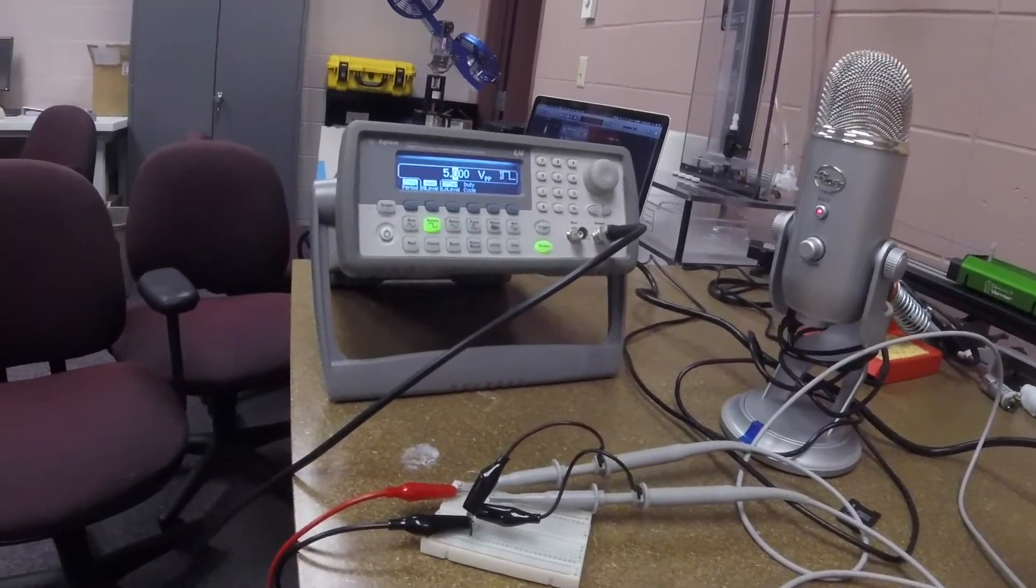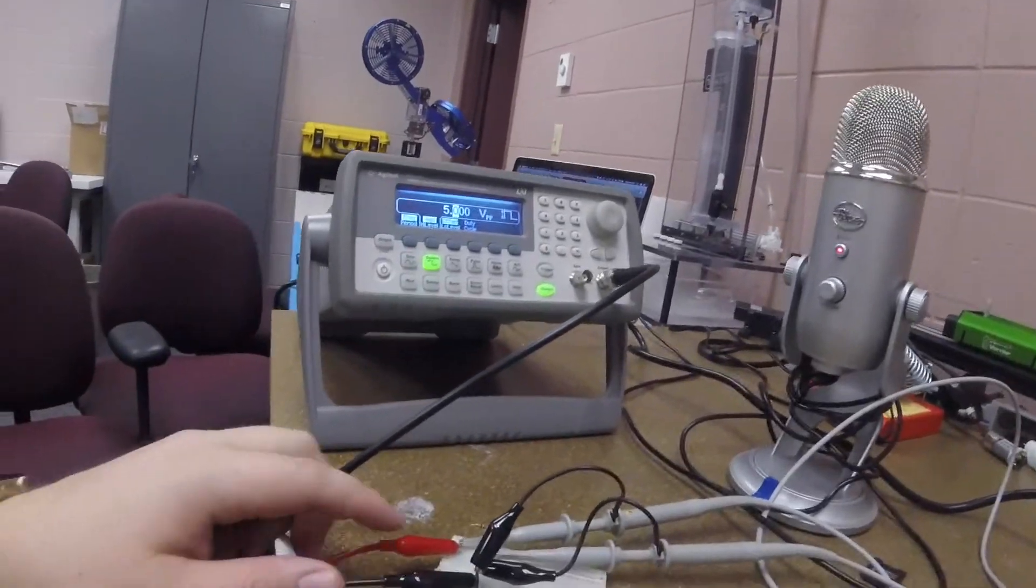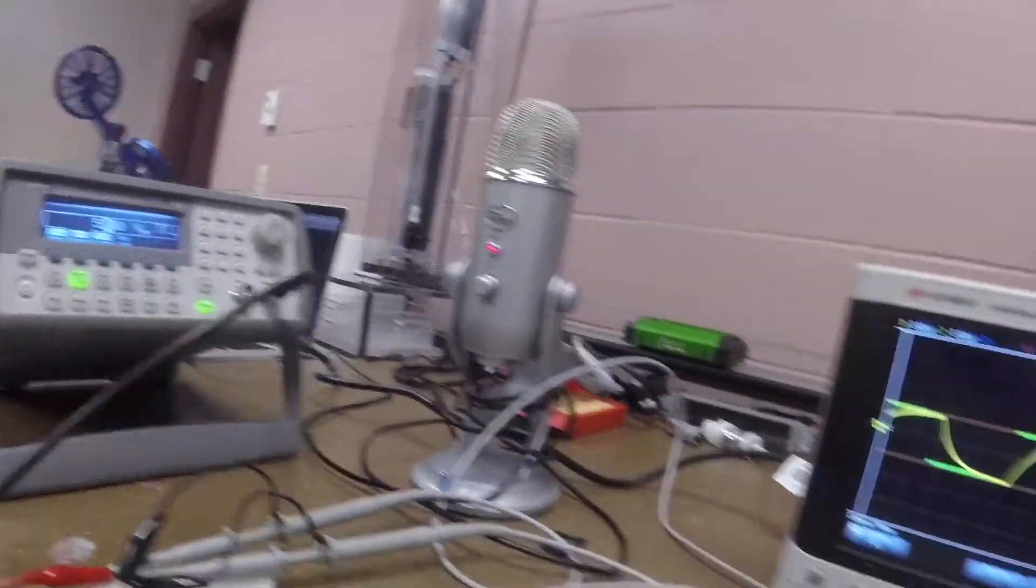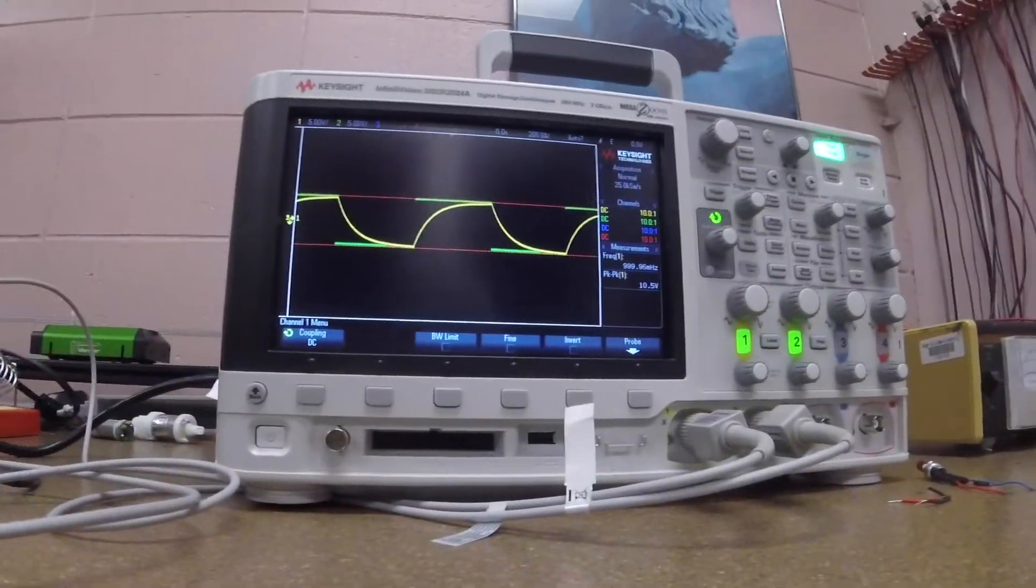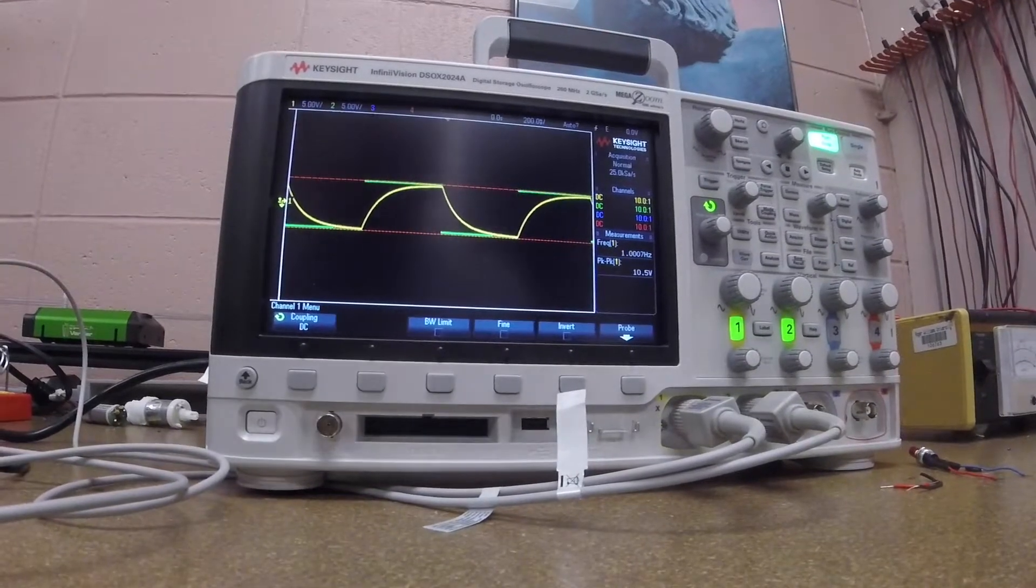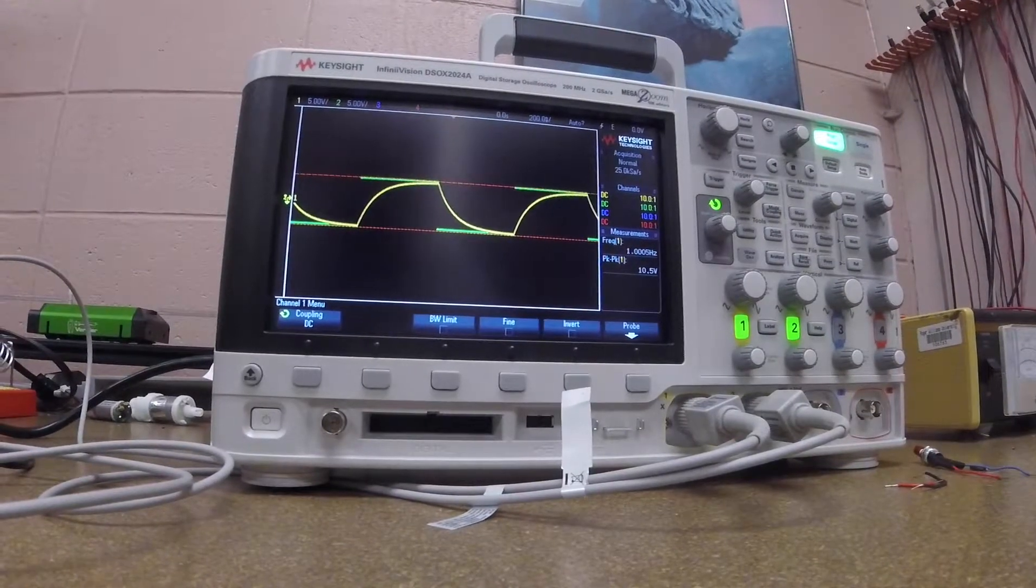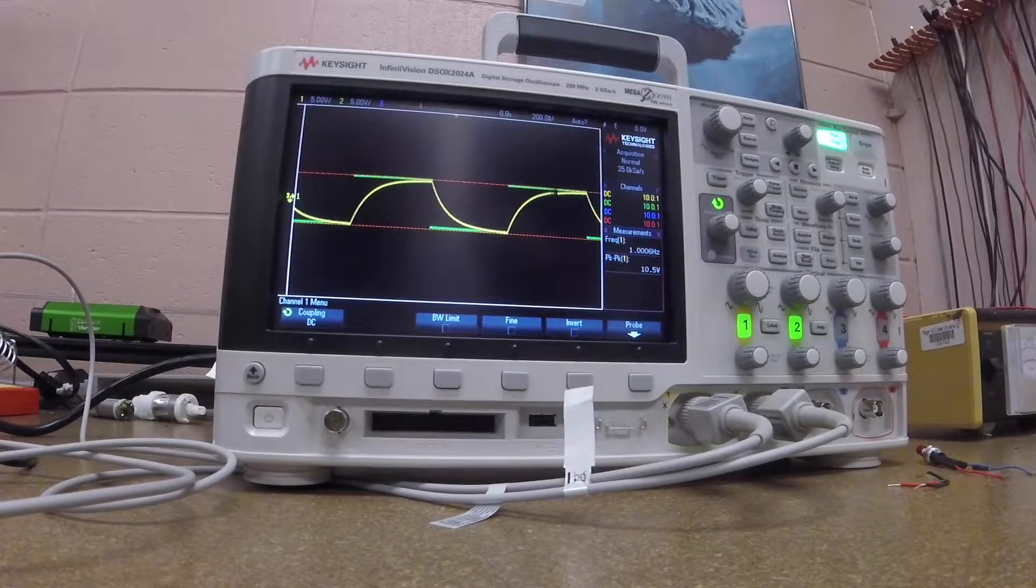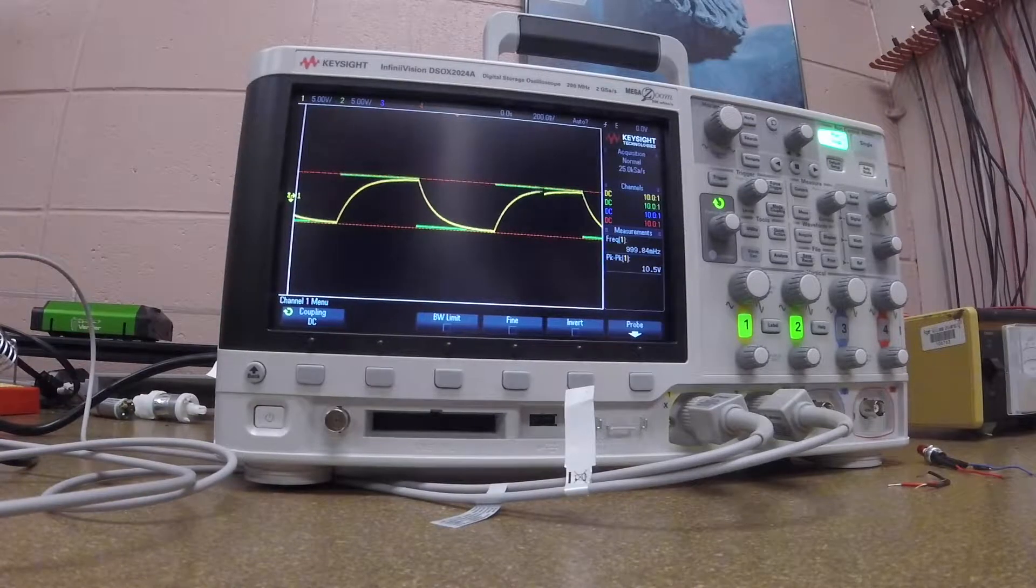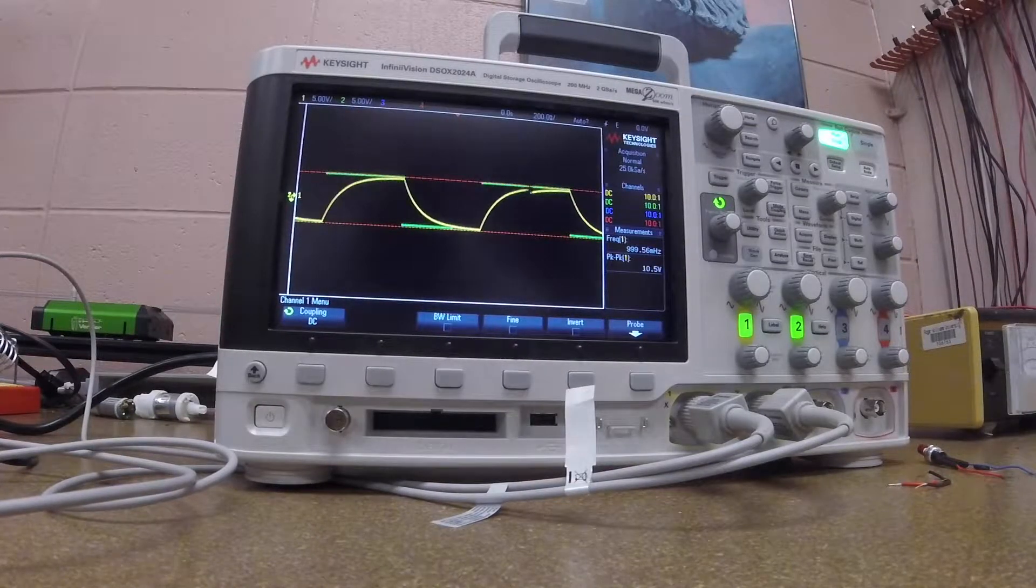Okay, so let's start by showing you my setup. I have a function generator, an RC circuit, and they're connected to the first two channels of my oscilloscope. What I'd like to do is show you how to go through all the basic functions of this Keysight DSO X2024A digital storage oscilloscope.